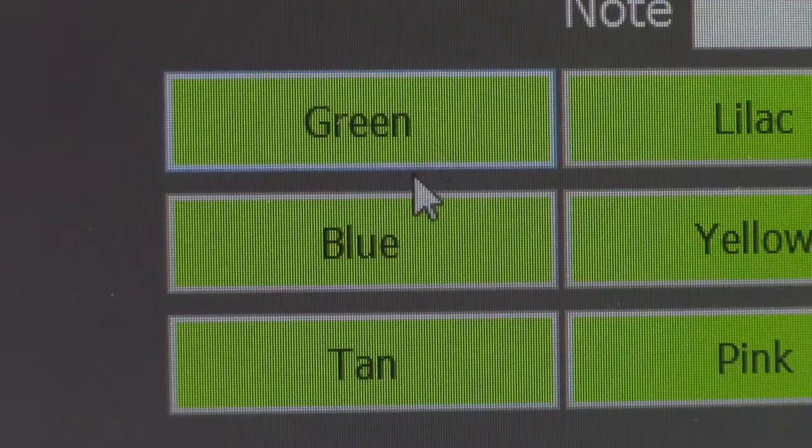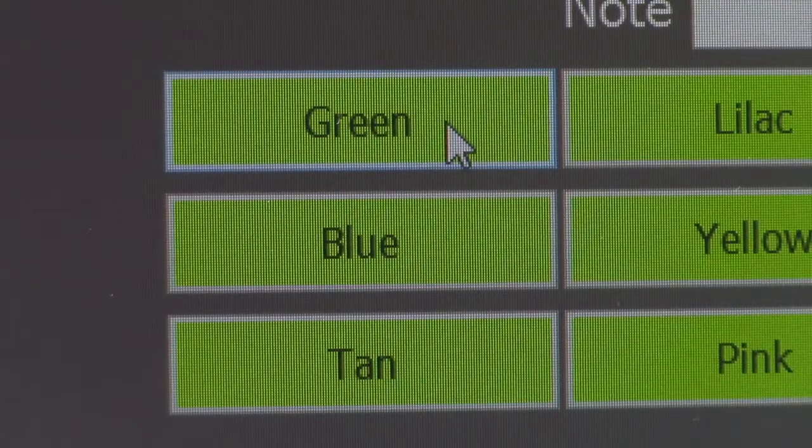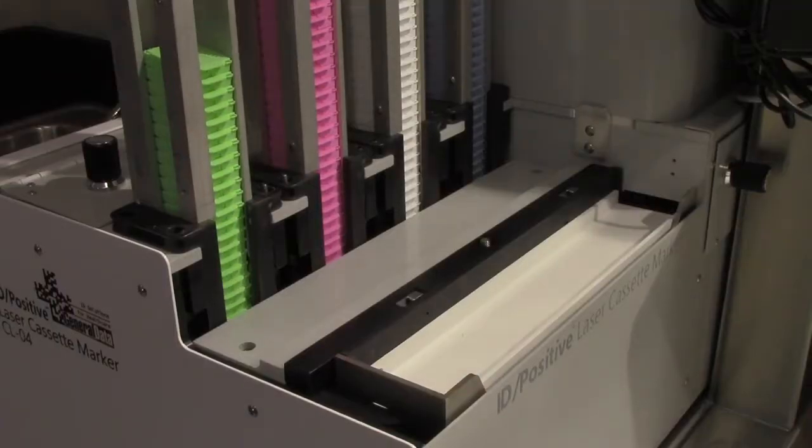Error proofing and reduce equipment footprint and noise at the same time. The CLO4 Laser Cassette Marker is a four-magazine auto-feed tissue cassette marker with text, linear, and two-dimensional barcoding capabilities.